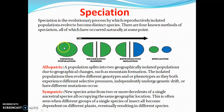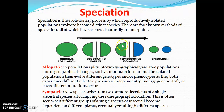As you can see in this diagram, this is the original population which is green in color, and this is the geographical barrier with respect to the time period. This is the reproductive isolation. This species is different and this species is different. Due to the reproductive isolation, two species will become formed.